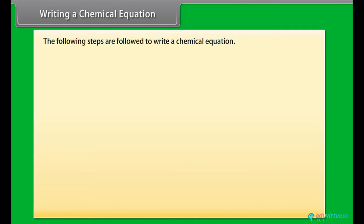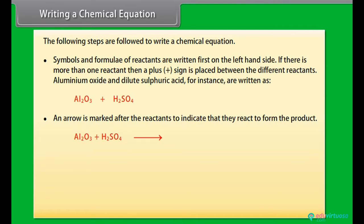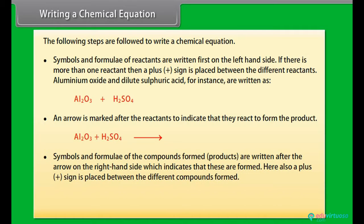The following steps are followed to write a chemical equation: Symbols and formulae of reactants are written first on the left hand side. If there is more than one reactant, then a plus sign is placed between the different reactants. For instance, aluminum oxide and dilute sulfuric acid are written as Al2O3 plus H2SO4. An arrow is marked after the reactants to indicate that they react to form the product. Symbols and formulae of the compounds formed are written after the arrow on the right hand side.